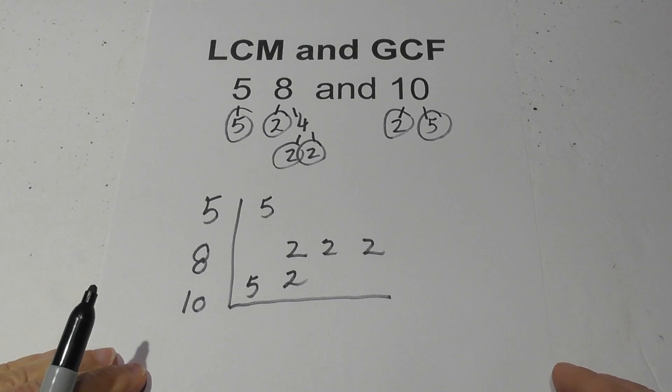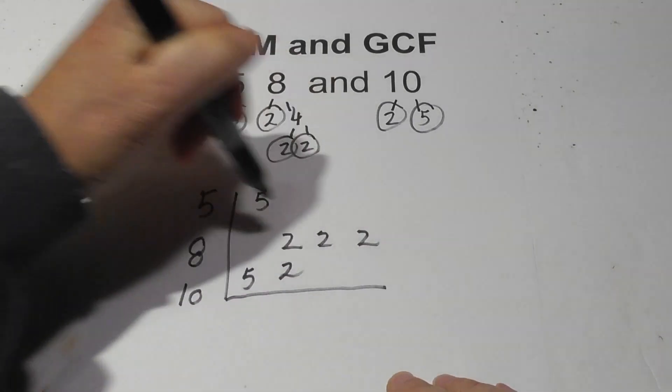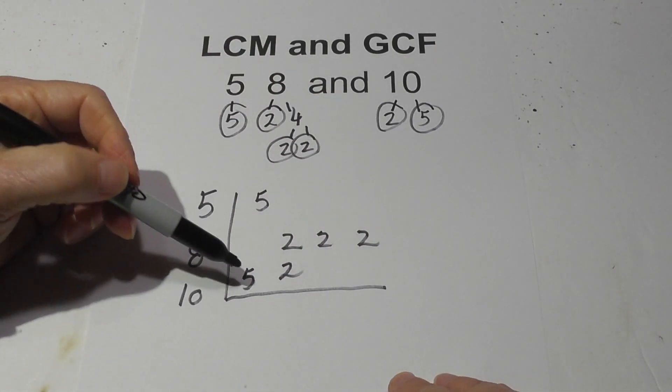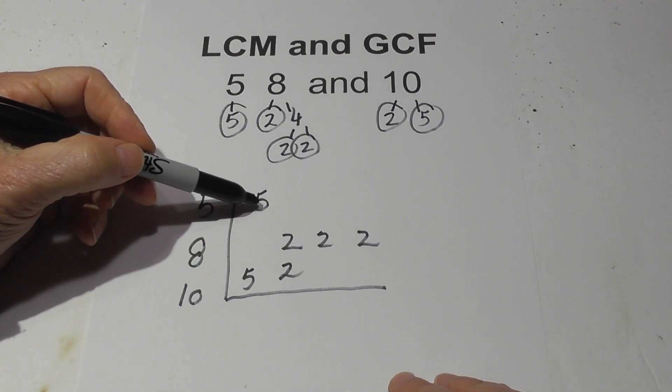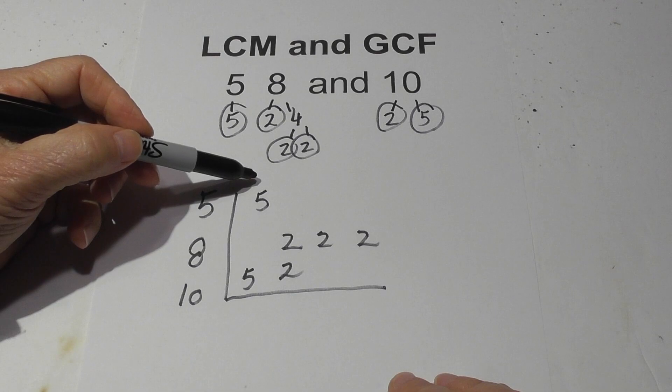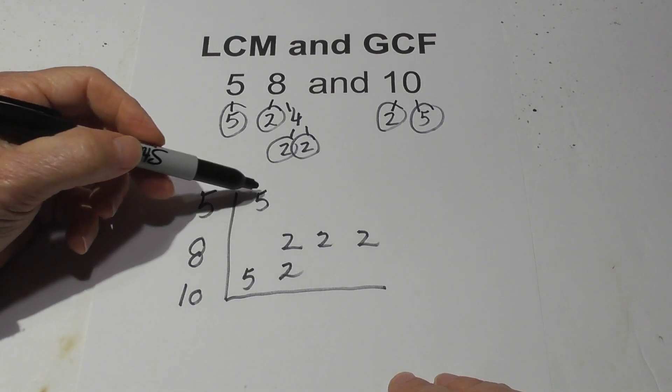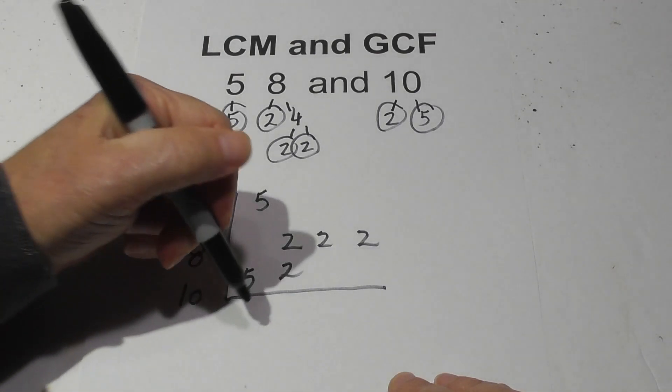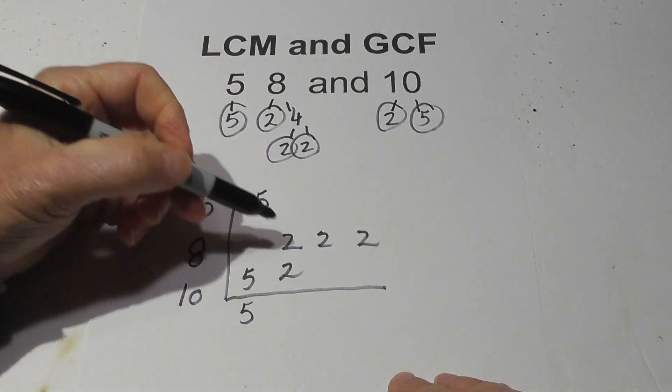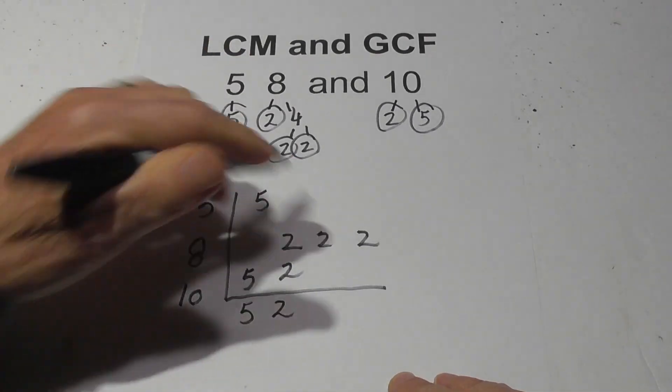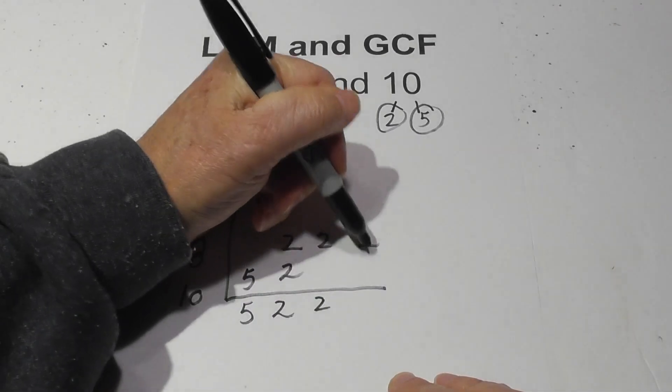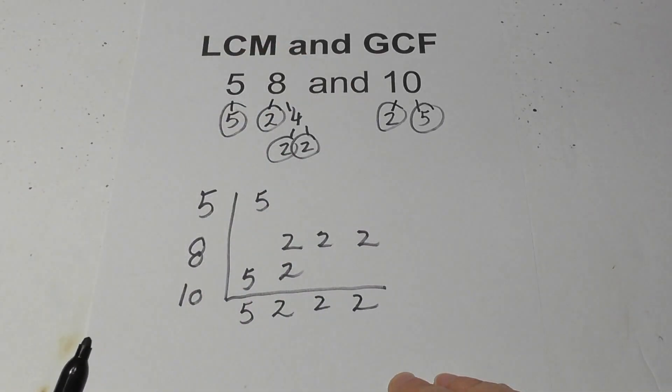So now, in order to find the LCM, you basically just multiply these together. But if you have 2 or 3 of the same numbers, or the same numbers in a column, then you only bring the number down once. So I have 2 5s, so I'm going to bring down a 5. I have 2 2s, so I'm going to bring down a 2. I'm going to bring down 1 2 here, and 1 2 there.